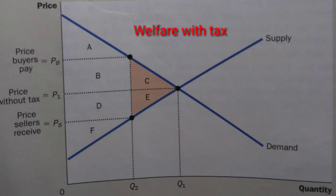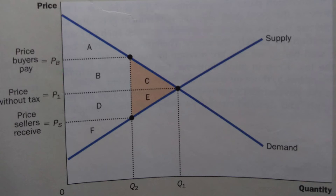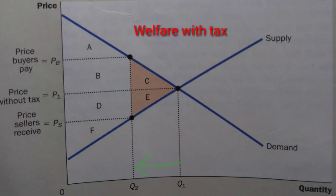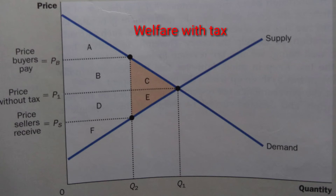Now consider welfare after a tax is enacted. The price paid by buyers rises from P1 to PB, so consumer surplus now equals only area A — the area below the demand curve and above the buyer's price. The price received by sellers falls from P1 to PS, so producer surplus now equals only area F — the area above the supply curve and below the seller's price. The quantity sold falls from Q1 to Q2, and the government collects tax revenue equal to the area B plus D. Adding consumer surplus, producer surplus, and tax revenue, total surplus with the tax is area A plus B plus D plus F.